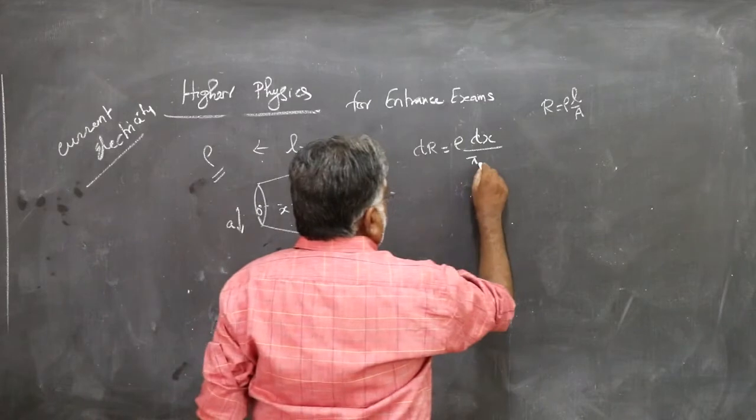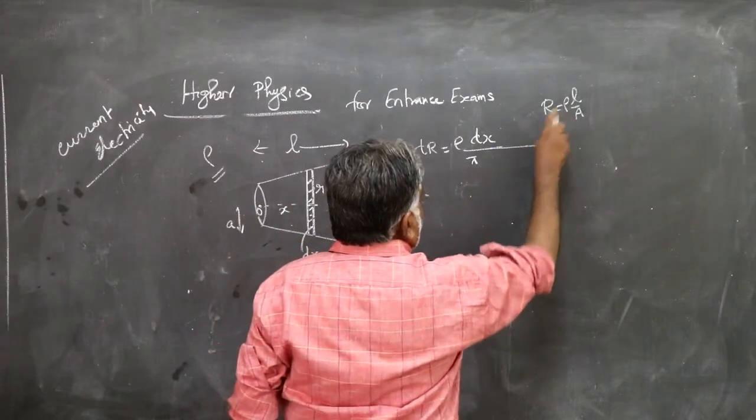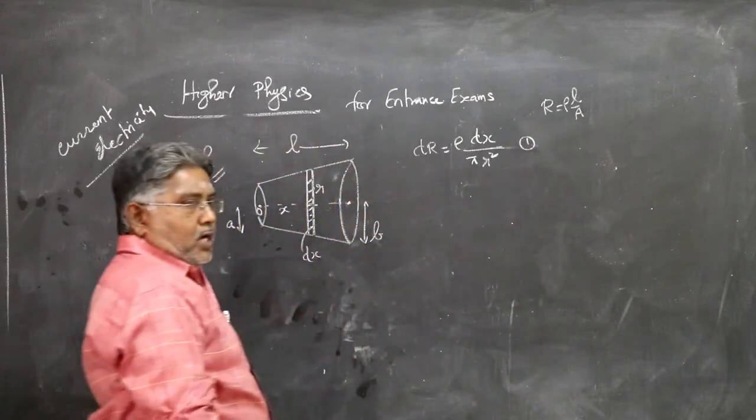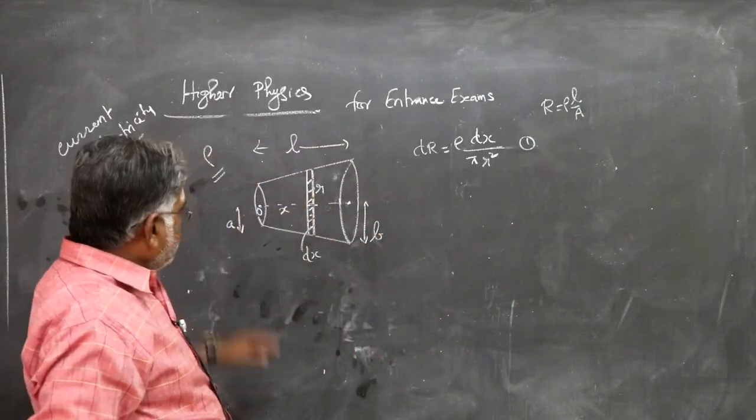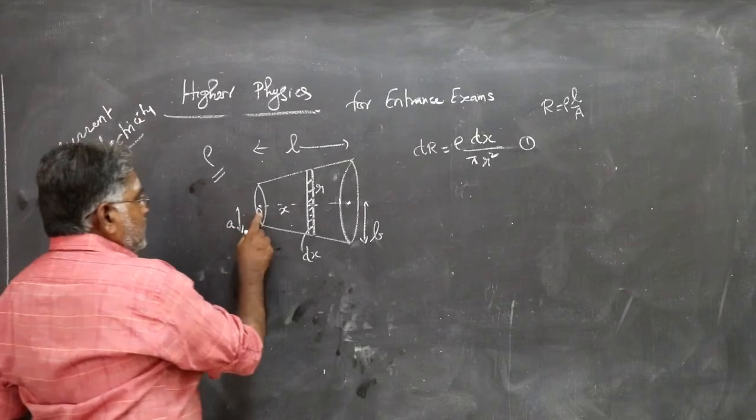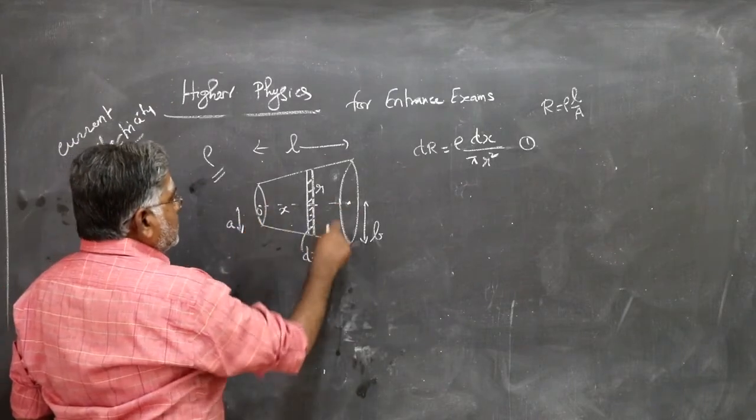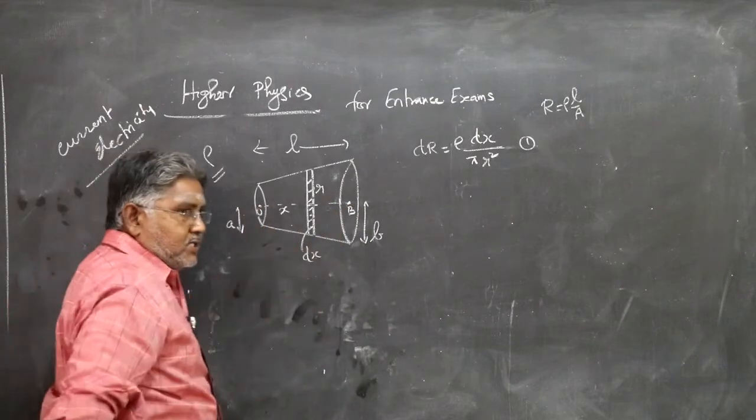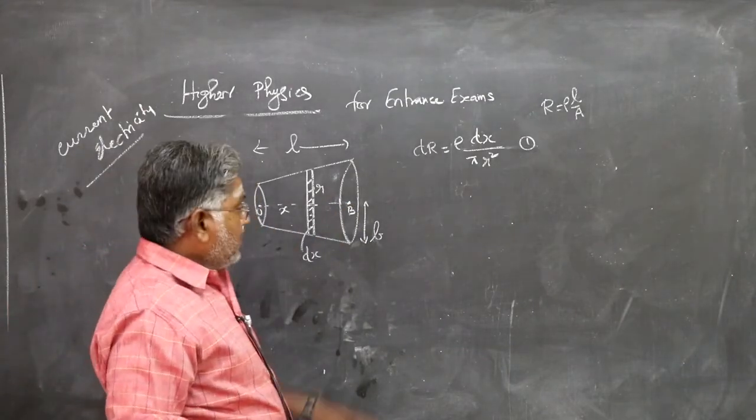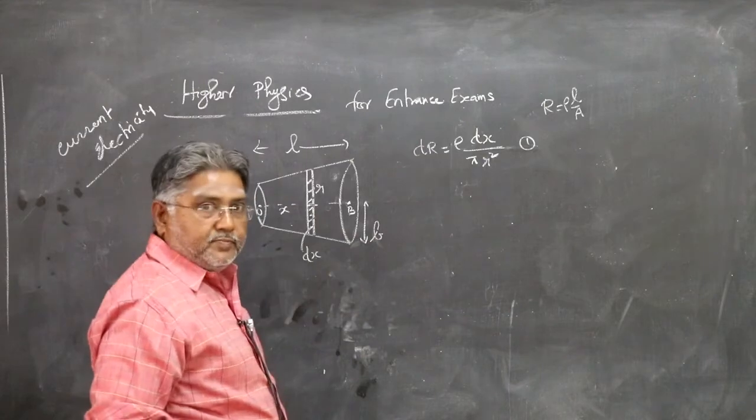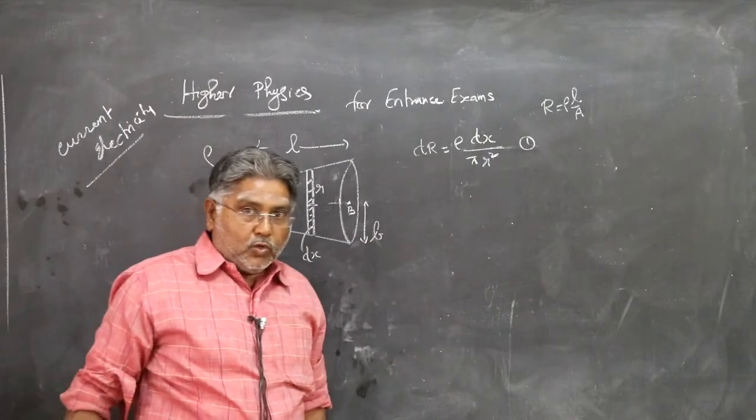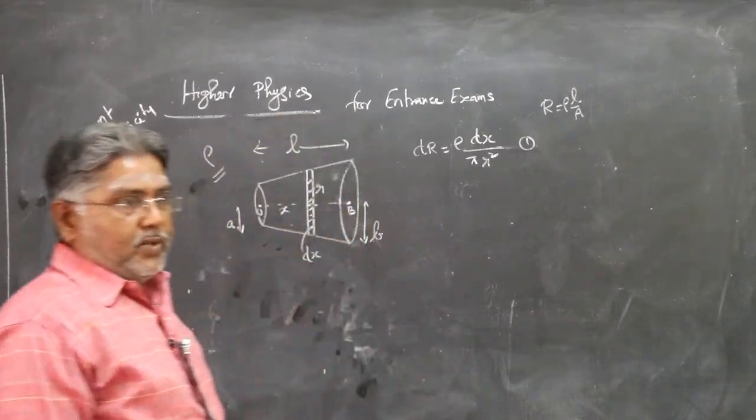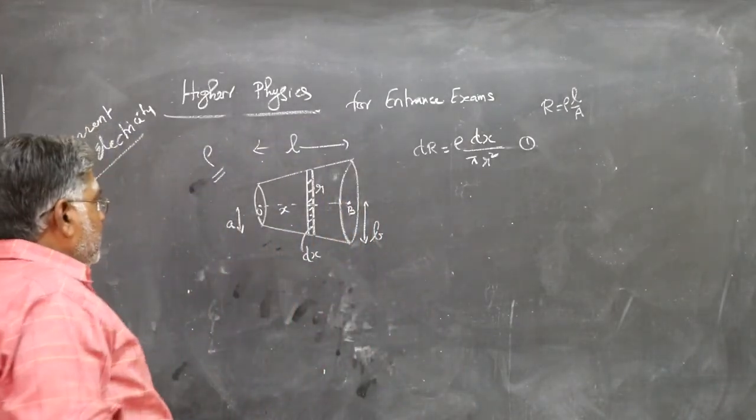Say pi R squared, but R I can directly write. How do you find R? You can see, as you go all the way from O to this side, all the way when you go from O to B, radius increases by an amount B minus A. All the way when you go from O to B, the radius increases from A to B in a uniform way.